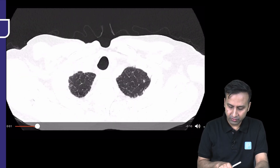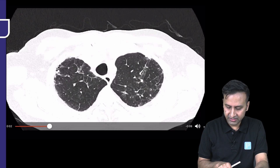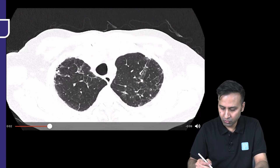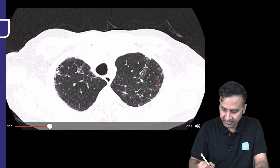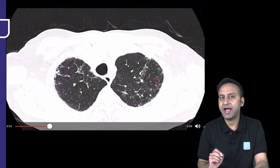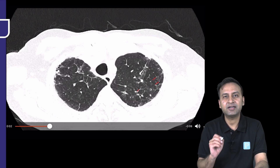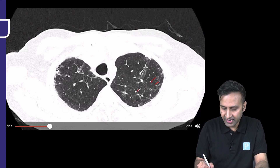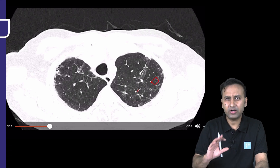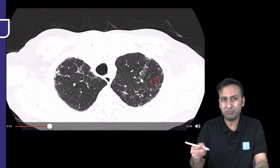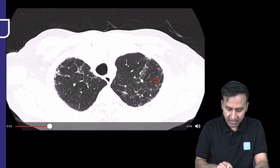Looking from the top, it is very easy to identify that there is an excessive number of lines in this image. There are lines located in the lung parenchyma everywhere, so we do have a reticular pattern. This reticular pattern is taking the shape of interlobular septal thickening because it is more hexagonal. Interlobular septal thickening will be much finer — it will be lace-like or net-like.